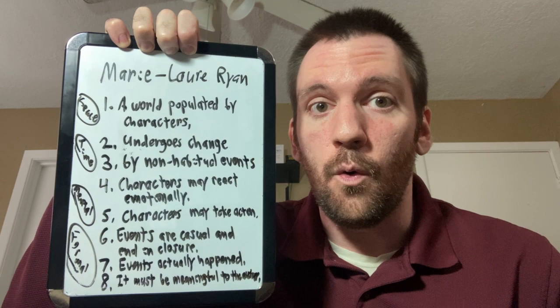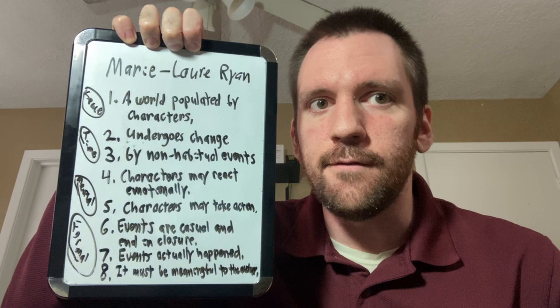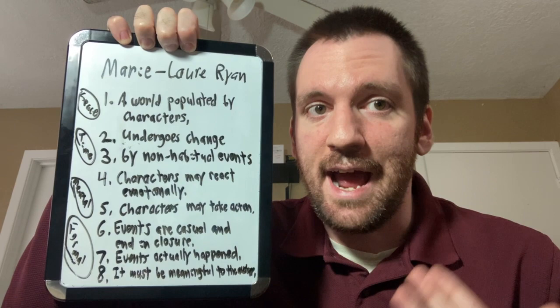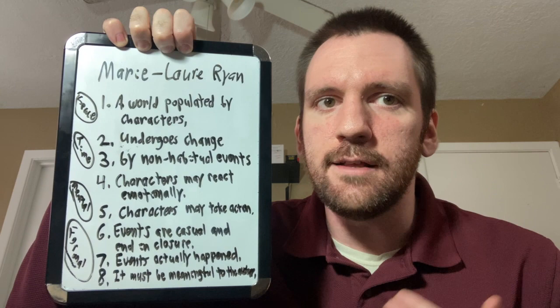You have the mental dimension. The characters may react, or they may also act upon the events that happen. And then you have the formal dimension. It is a series of causally connected events, one that affects the other, that eventually ends in closure. It's something that actually happened. It can't be a dream sequence or an imagining. And it must be something that communicates something meaningful to the audience.